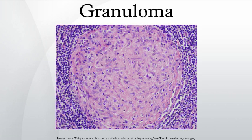All granulomas, regardless of cause, may contain additional cells and matrix. These include lymphocytes, neutrophils, eosinophils, multinucleated giant cells, fibroblasts, and collagen.